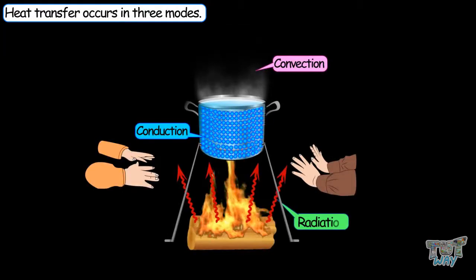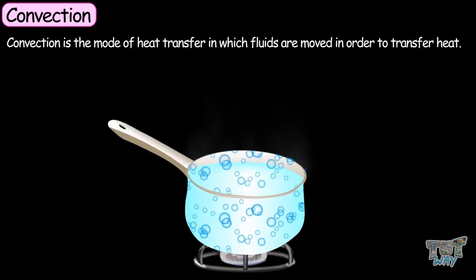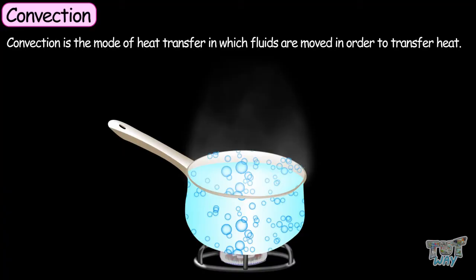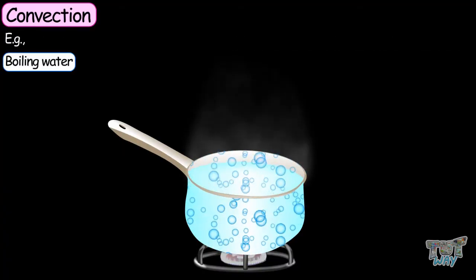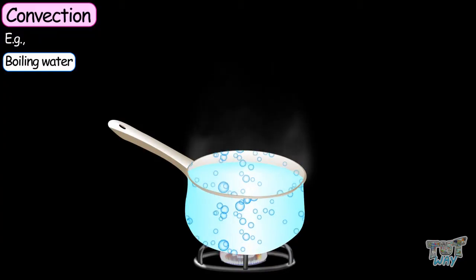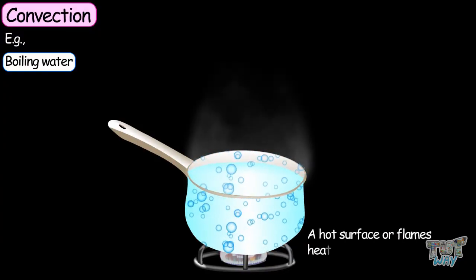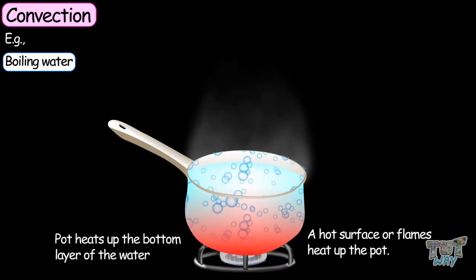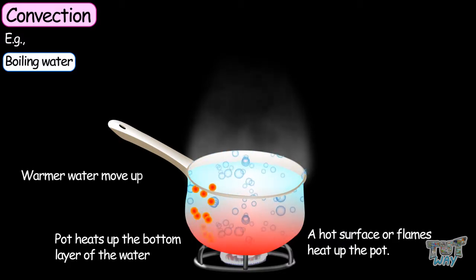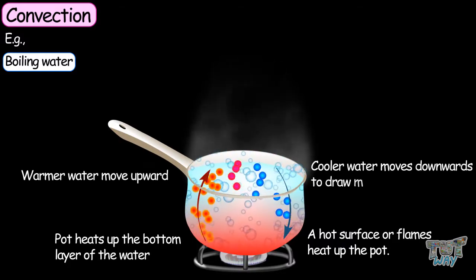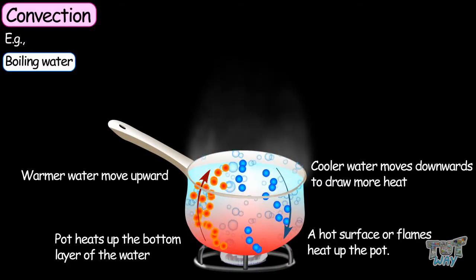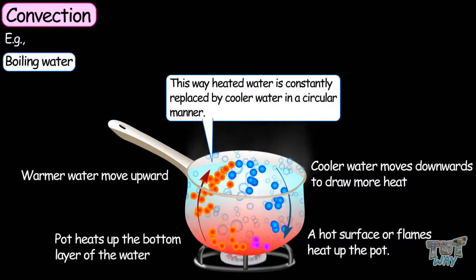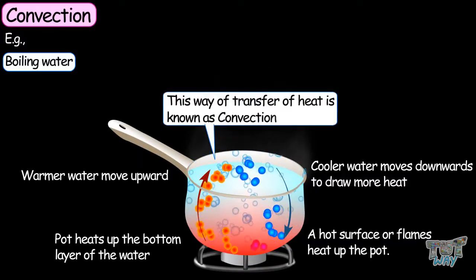Now let's learn what is convection. Convection is the mode of heat transfer in which fluids are moved in order to transfer heat. Boiling water is an example. First, a hot surface or flames heat up the pot. Heat transfers from the bottom of the pot to the bottom layer of the water. The warmer water moves upwards and the cooler water moves downwards, and this cycle continues. Heated water is constantly replaced by cooler water in a circular manner — this is convection.